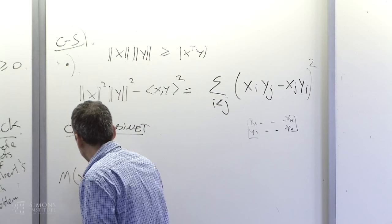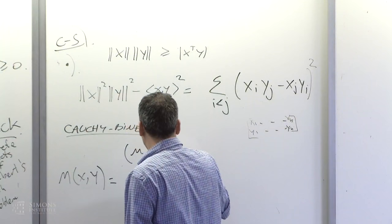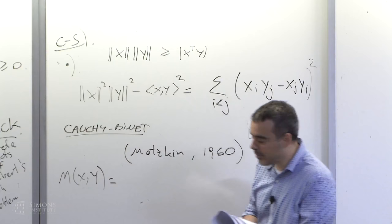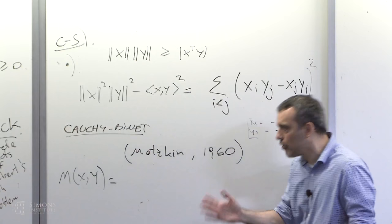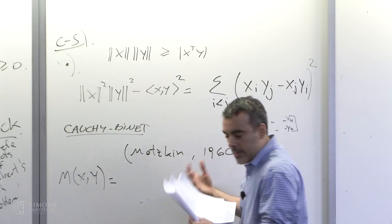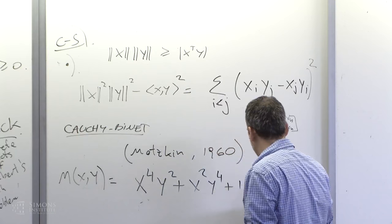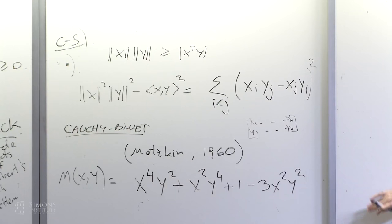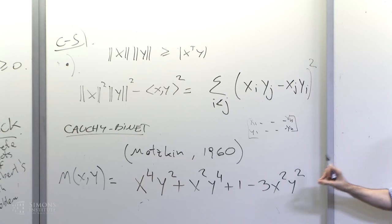Hilbert proved the existence of non-sum-of-squares non-negative polynomials non-constructively. The first explicit example was given by Motzkin, all the way in 1967. He gave this very nice example of a sextic: x²y⁴ + x⁴y² + 1 − 3x²y². This is a degree-6 polynomial in two variables. It's not very difficult to convince yourself this polynomial is non-negative — it's really the arithmetic-geometric mean inequality applied to the numbers x²y⁴, x⁴y², and 1. But it is not a sum of squares.